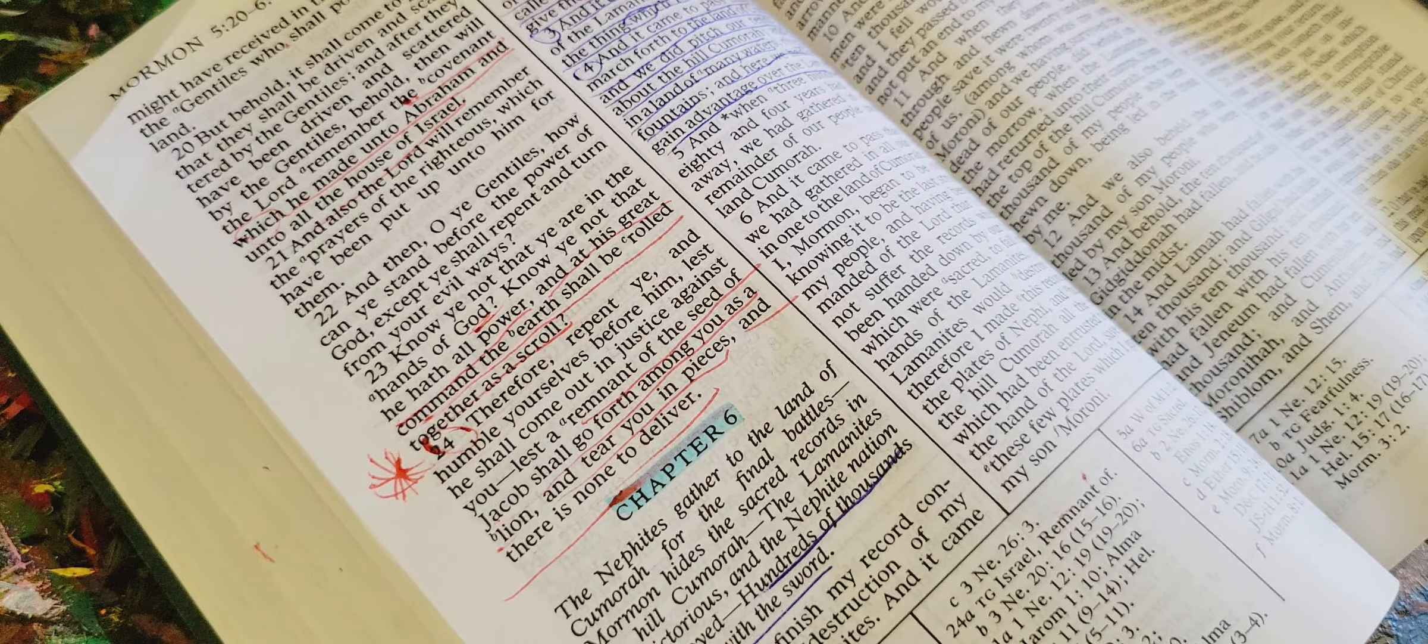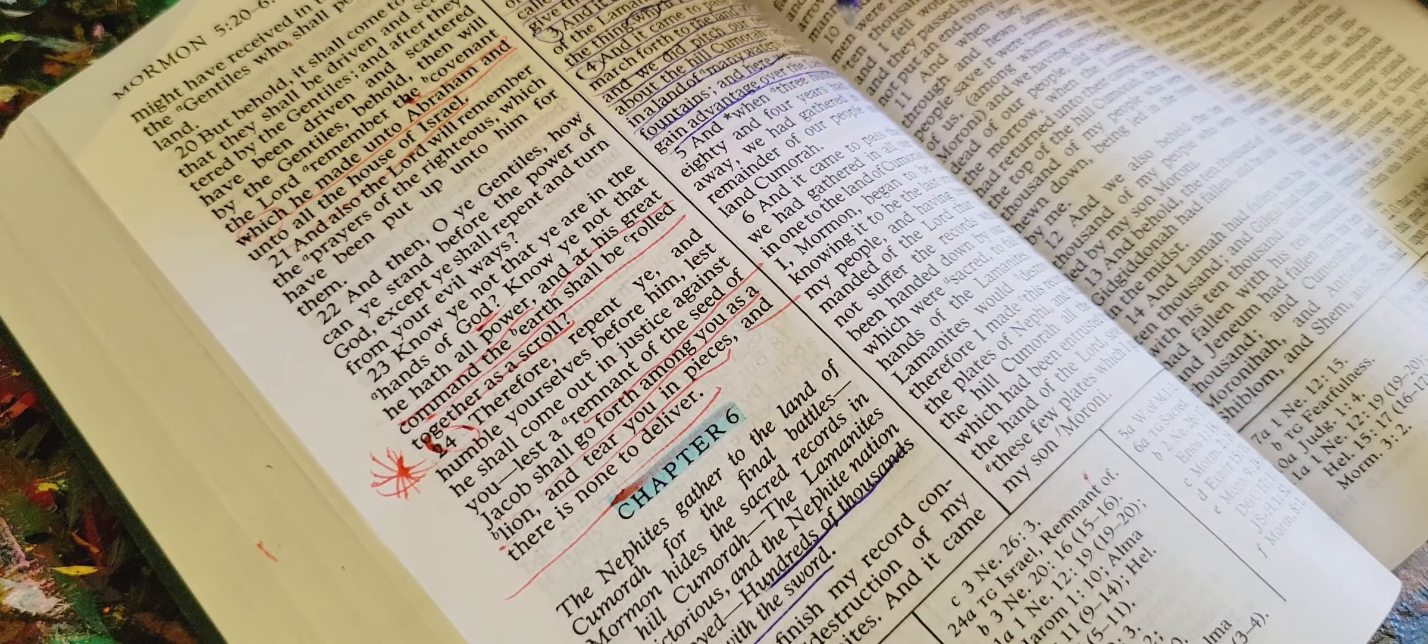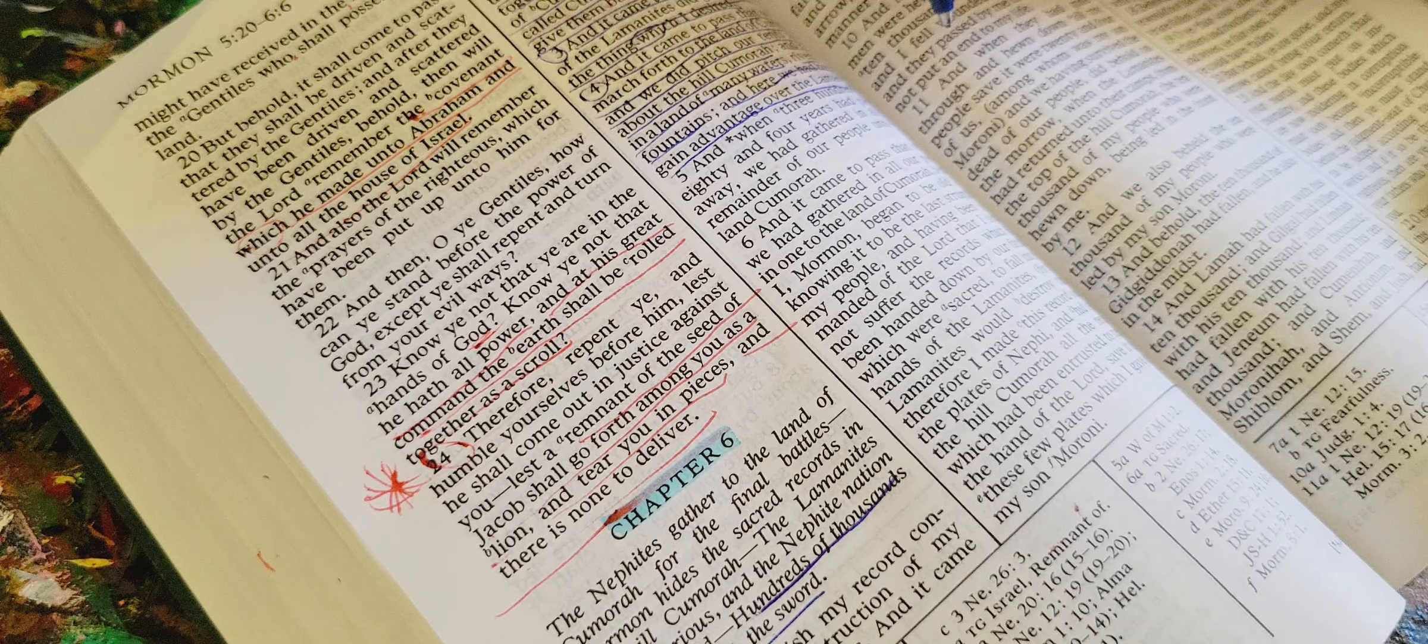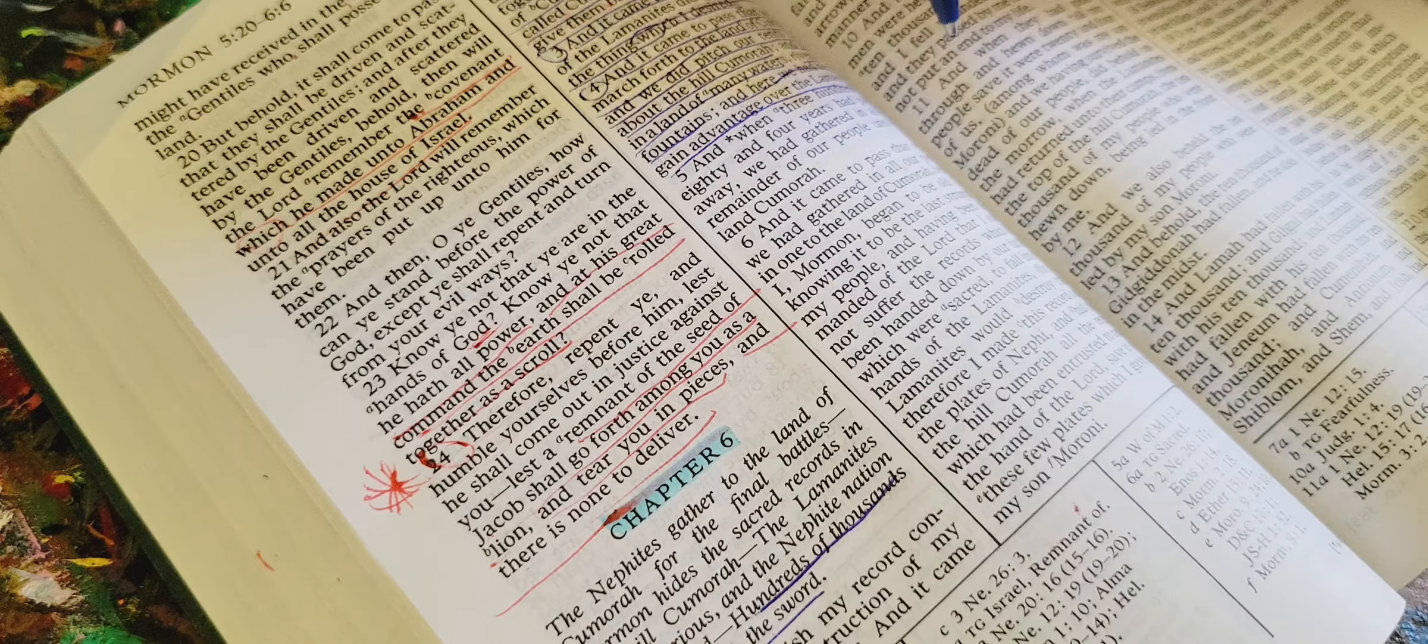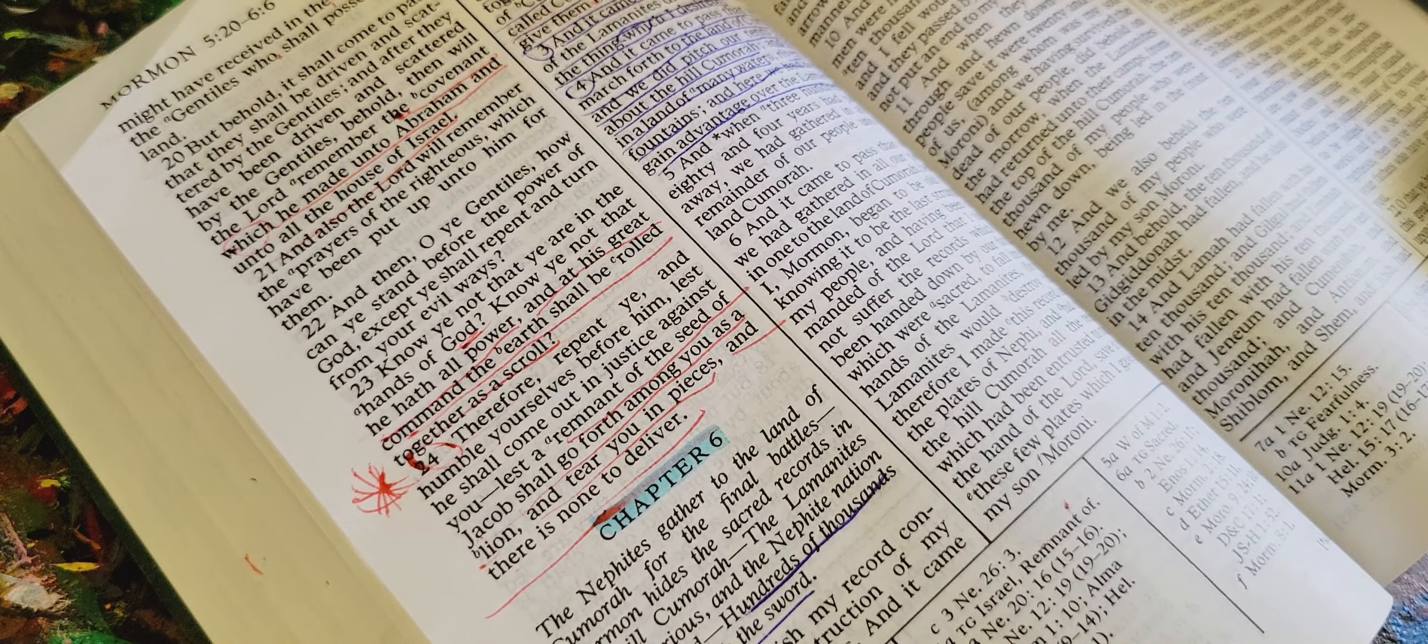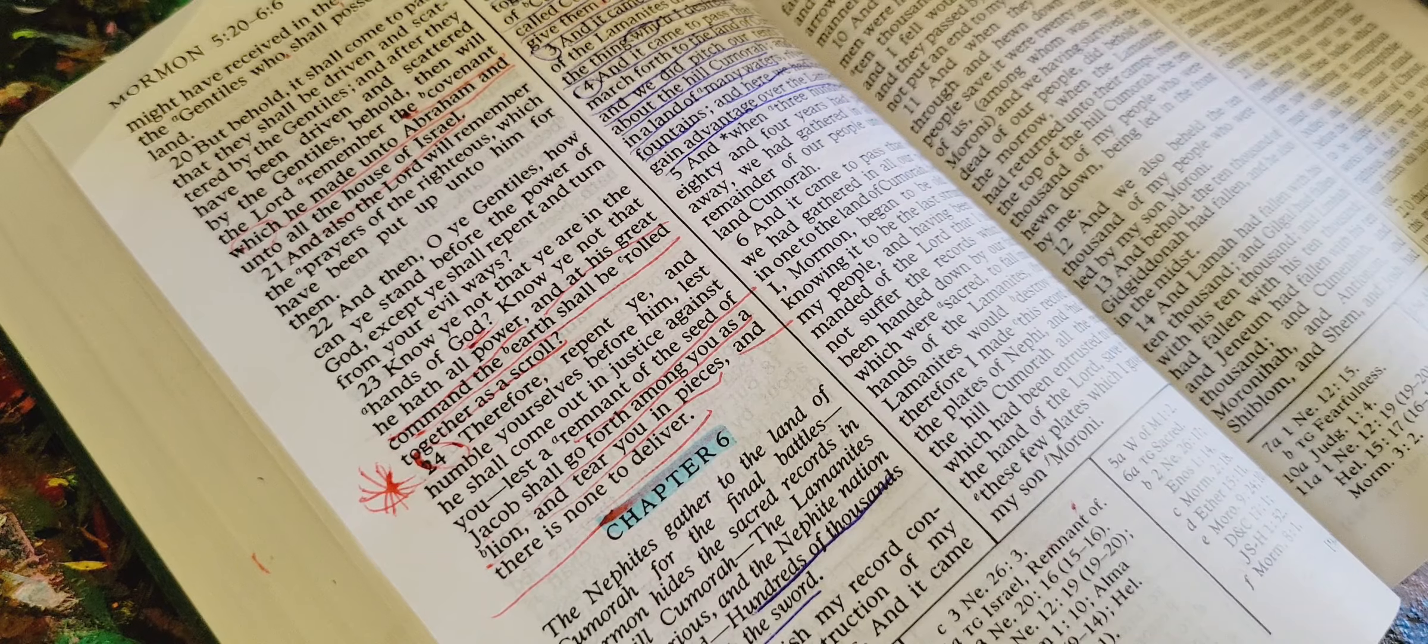And it came to pass that when we had gathered in all our people in one land of Kumora, behold, I, Mormon, began to be old, and knowing it to be the last struggle of my people, and having been commanded of the Lord that I should not suffer the records which had been handed down by our fathers, which were sacred, to fall into the hands of the Lamanites, for the Lamanites would destroy them. Therefore I made this record out of the plates of Nephi, and hid up in the hill of Kumora, and the records which had been entrusted to me by the hand of the Lord, save it were these few plates which I gave unto my son Moroni.